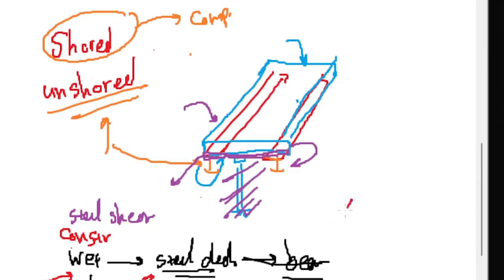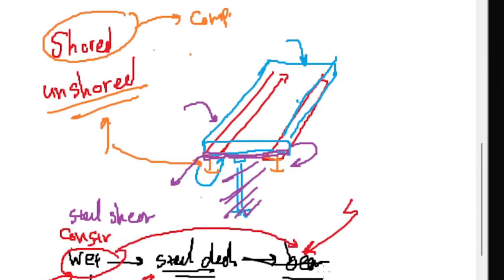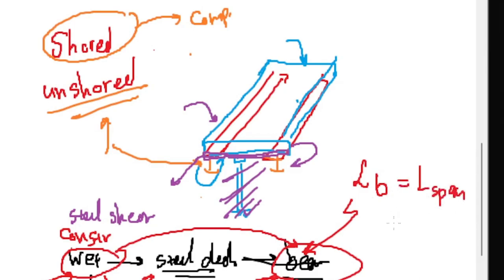An important point about beam design in unshored construction: I said before that the beam is laterally braced for its entire length. This is not always true in unshored construction. As long as the concrete is wet and has not set, your beam is no longer laterally supported — the concrete is too weak. Only after the concrete gains enough strength can it be assumed to laterally support the beams. Therefore, the bracing length equals the full span during construction, then becomes continuous after concrete sets. You need to check both cases.